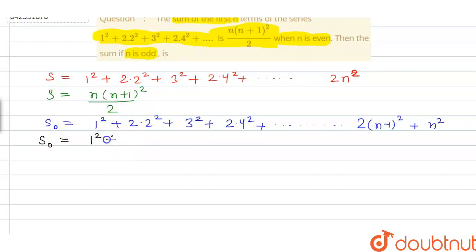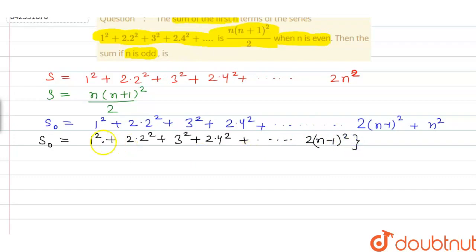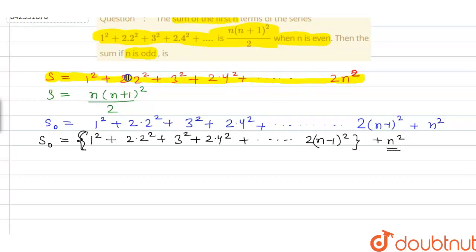So S_naught can be written as: 1² + 2·2² + 3² + 2·4² and so on till 2(n-1)², plus n². The question arises: why have we separated this n² out of the whole term? We separate it because the first equation says S is defined up to 2·n², suggesting that when n is even, the sum follows the given formula.